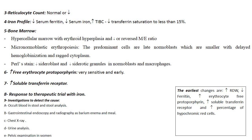The next step is to perform an iron profile including serum iron, serum ferritin, transferrin saturation, and total iron-binding capacity. In iron deficiency anemia patients, there will be low serum ferritin, low serum iron, low transferrin saturation, and high total iron-binding capacity.